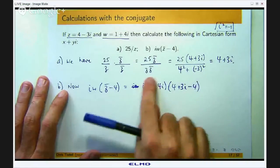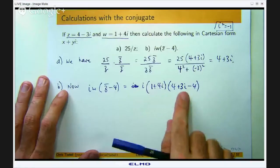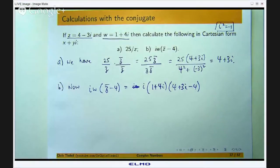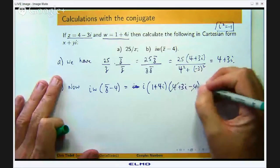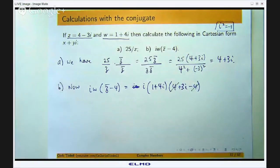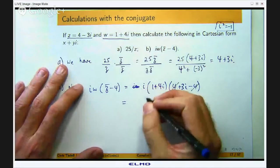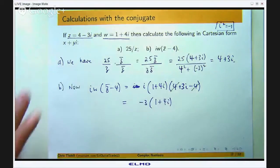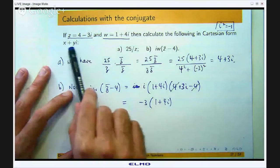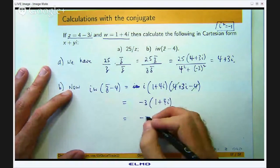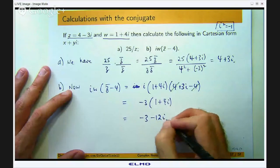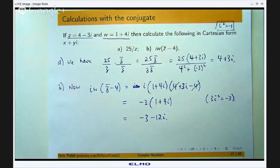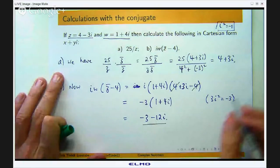Now you could, if you wanted to, distribute the i in there. It is not necessary though. Because I have got a 3i there I am going to team that up with the i over there and I will get 3i squared which is negative 3. So I am going to get 3i squared which is negative 3 times 1 plus 4i. Now they want it in the Cartesian form so I will actually distribute that negative 3.